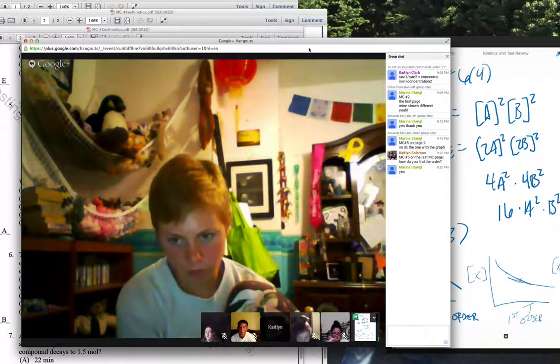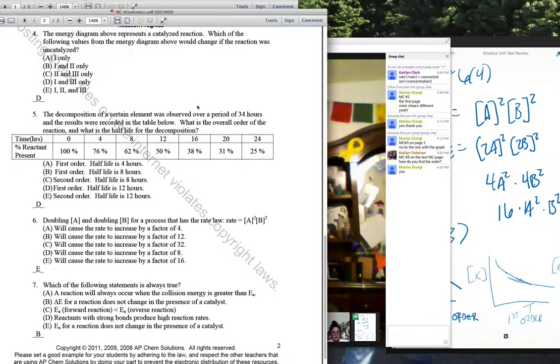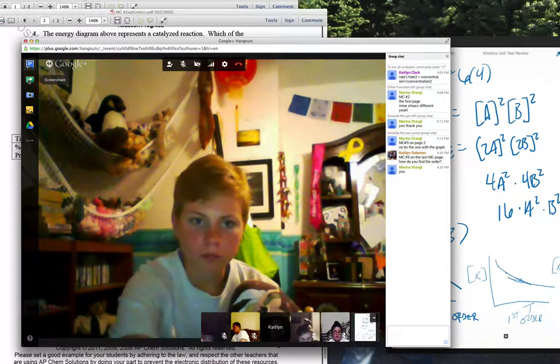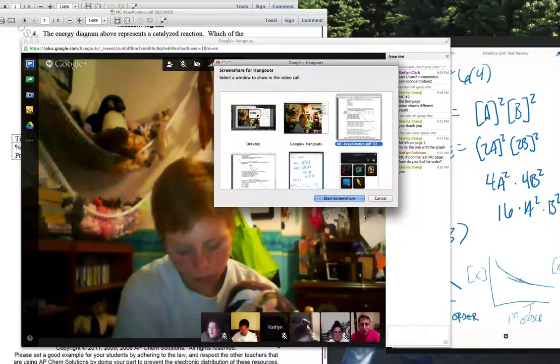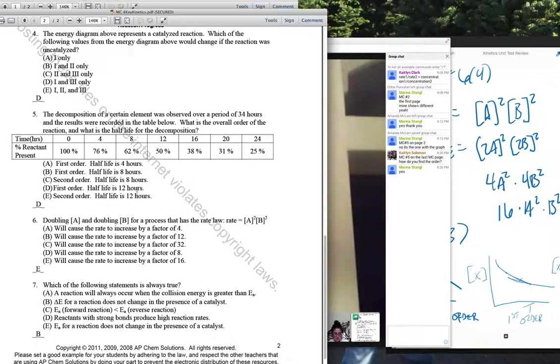So multiple choice number five on the last multiple choice page. How do you find the order? All right. So that one was this one. Okay. So, the decomposition. So what is the overall order of the reaction and what is the half life for the decomposition? Knowing that the first order and the half life. So the half life being 24 hours or 12 hours. I'm sorry. You guys could figure that part out. And I think Caitlin, you're inferring that because you can easily tell that if half of it's left over, then it's 12 hours. So your only choices are D or E.